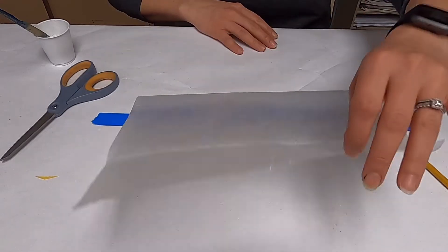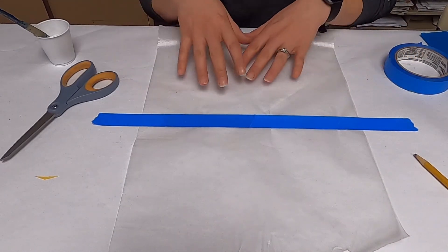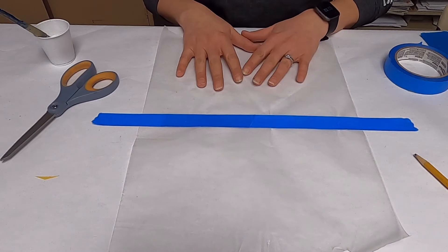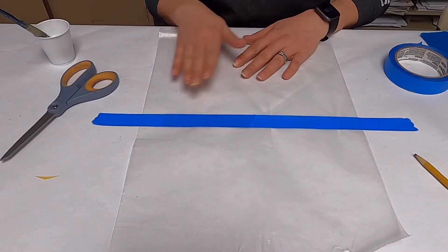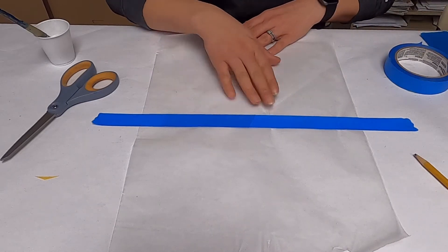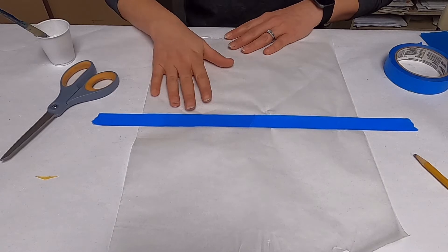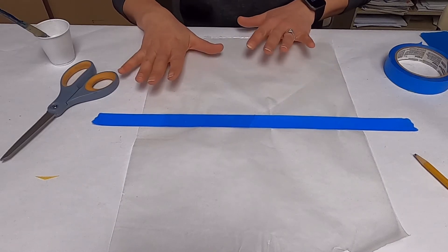You can do the same thing with contact paper. If you use contact paper, you don't have to use any glue. Just stick the pieces of tissue paper down and fold it on itself, and it adheres without glue.